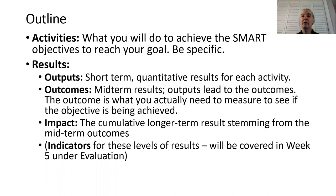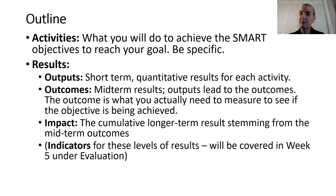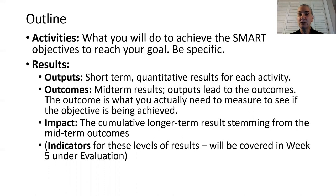The first level are the outputs, which are short-term quantitative results for each activity. The outputs lead to the outcomes, which are midterm results — they are what you actually need to measure to see if the objective is being achieved. Then the outcomes lead to the impact, which is a cumulative long-term impact stemming from the midterm outcomes. There are indicators you need to develop for each of these levels of results, and we'll cover that more in week five under evaluation.